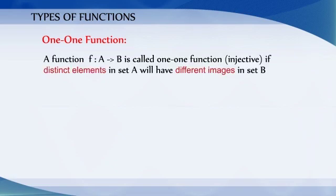Types of functions. A 1-to-1 function: a function f from a set A to the set B is called 1-to-1 or injective function if distinct elements in set A will have different images in set B. In this given example,